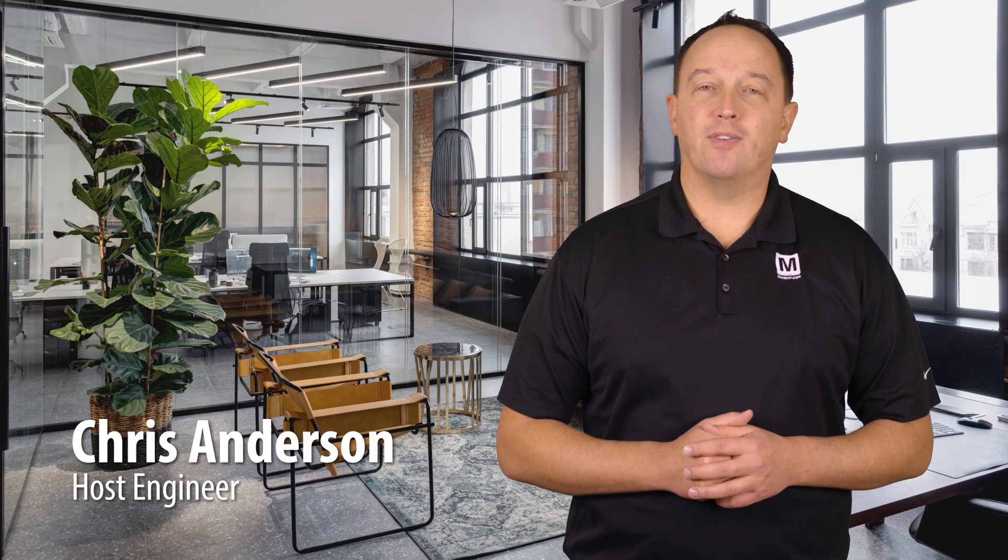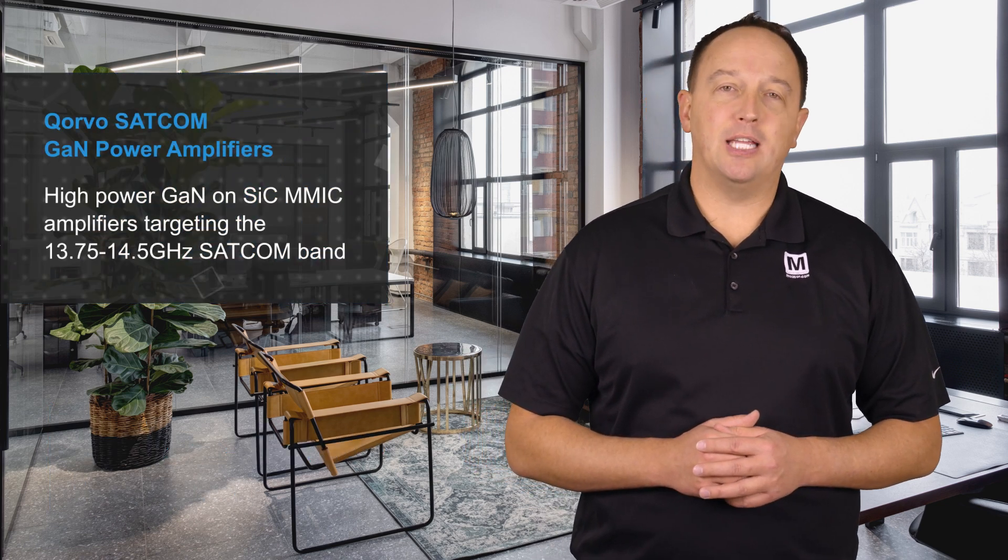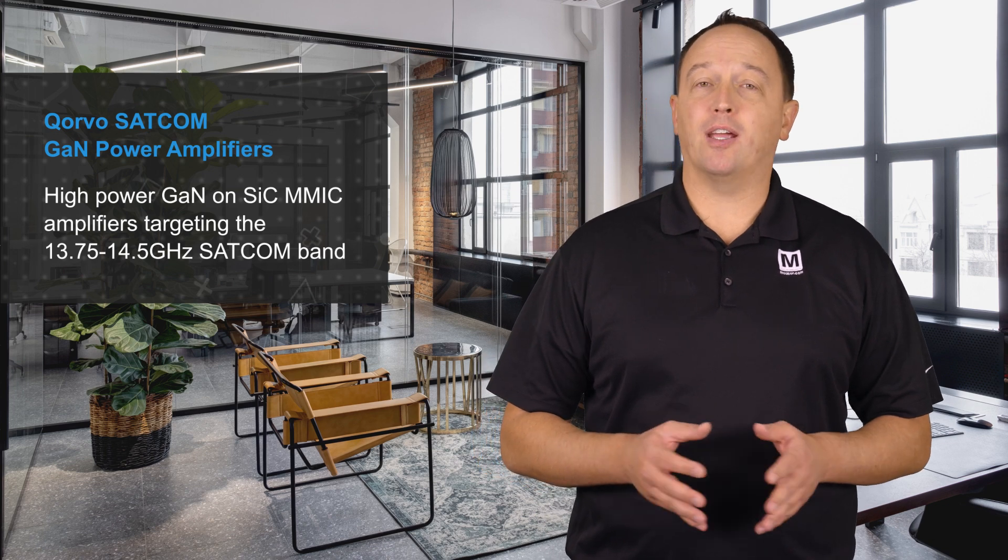Corvo SATCOM GaN Power Amplifiers, available from Mauser Electronics, are high-power GaN on SiC MMIC amplifiers targeting the 13.75 to 14.5 GHz SATCOM band.